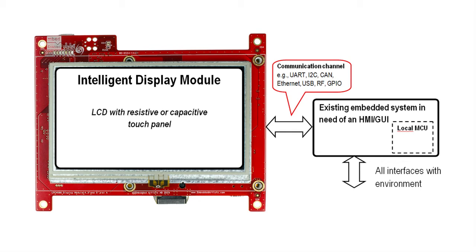There are multiple communication options for the existing embedded system and display module to be connected — for example, UART, Ethernet, USB, CAN, I2C, and SPI. The exact available communication interfaces can differ between display modules.